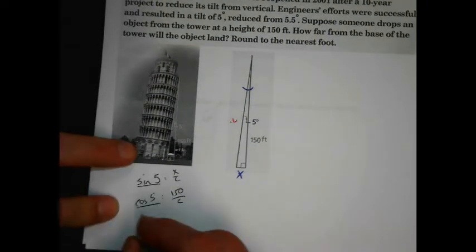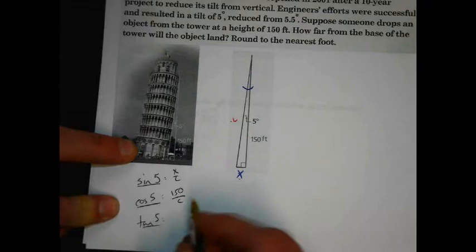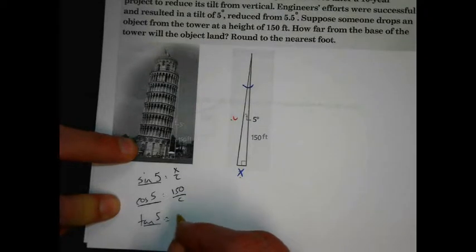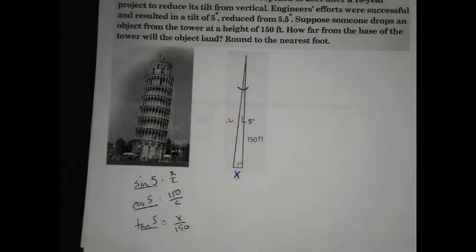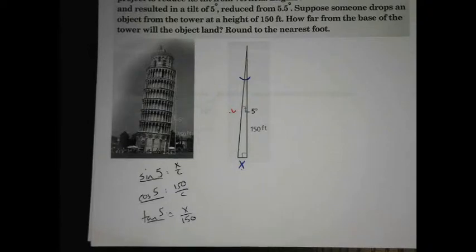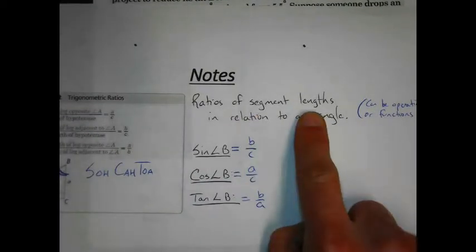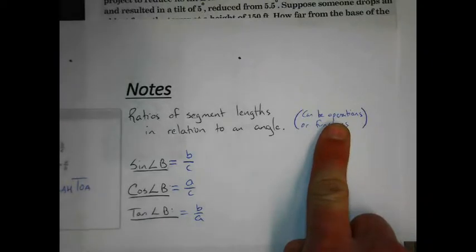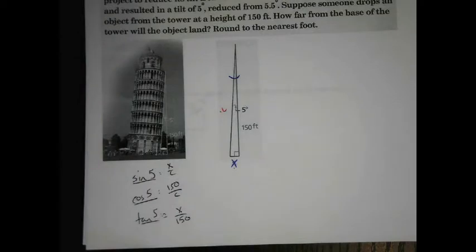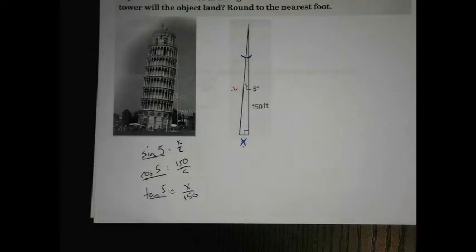Lastly, we can talk about the tangent of 5. The tangent is opposite over adjacent, so tangent of 5 would be x over 150. Now we're talking. But how do we know which one of these works? Remember from the previous notes, a trigonometric ratio is not only a ratio of segment lengths — it's also an operation. It's something we can do to an angle measure.